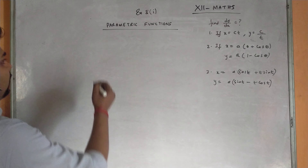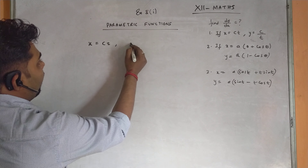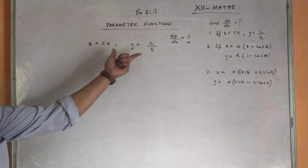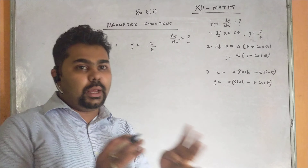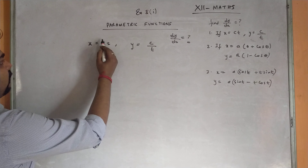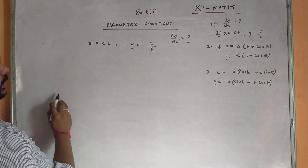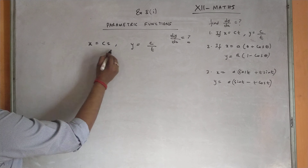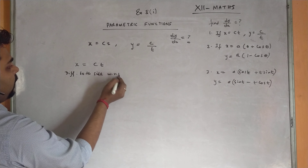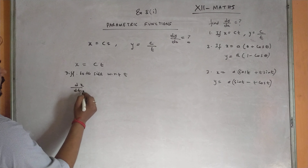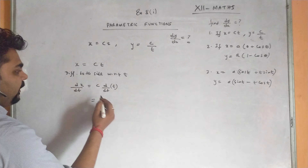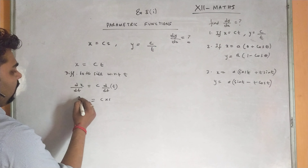First parametric question: x = ct and y = c/t; find dy/dx. Here c is a constant and t is the variable. Differentiating x = ct with respect to t: dx/dt = c·(1) = c. For y = c/t = c·t⁻¹, differentiating with respect to t: dy/dt = c·(-1)·t⁻² = -c/t².